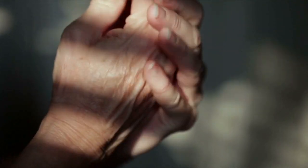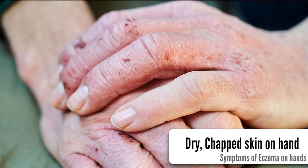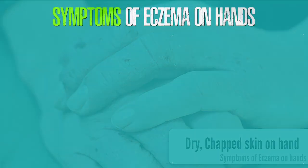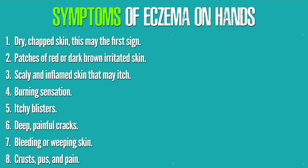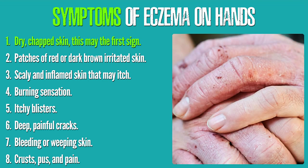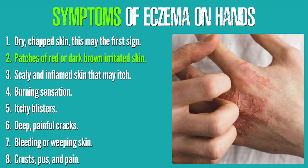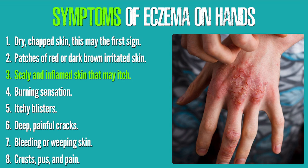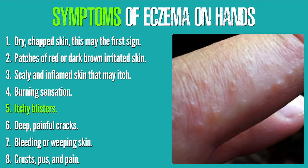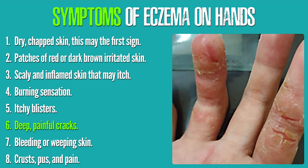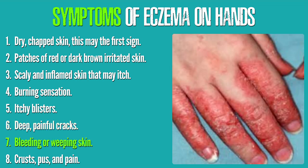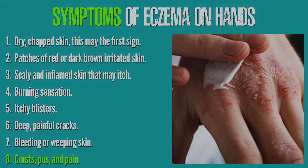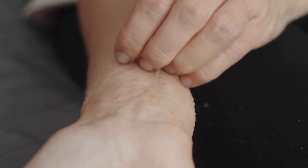Symptoms of hand eczema vary depending on the individual's age, lifestyle, and medical history. Dry and chapped skin is usually the first symptom doctors diagnose. Other symptoms include patches of red or dark brown irritated skin, scaly and inflamed skin that may itch, burning sensation, itchy blisters, deep painful cracks, bleeding or weeping skin, crusts, pus, and pain.